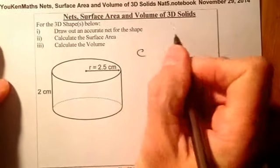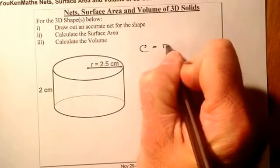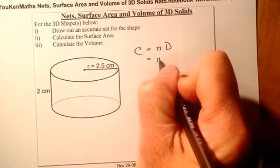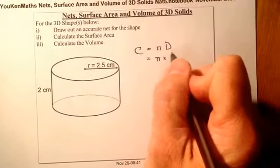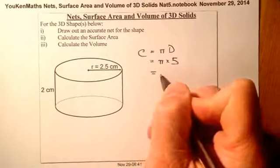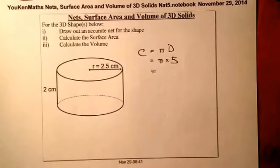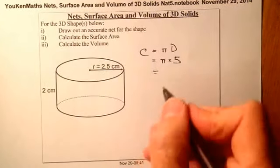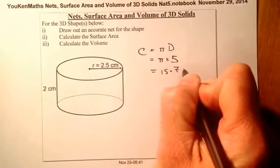The circumference of a circle equals pi times its diameter, so that's pi times two times 2.5, giving pi times five. That works out to 15.7 centimetres to one decimal place.